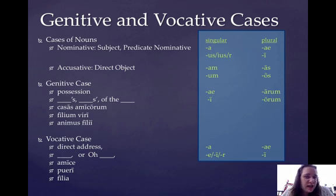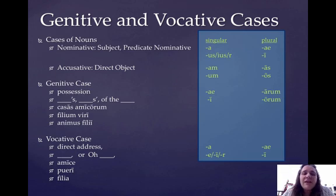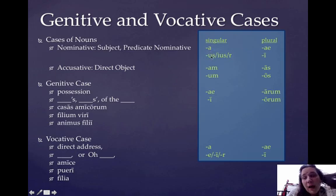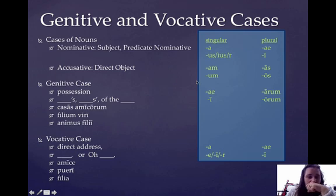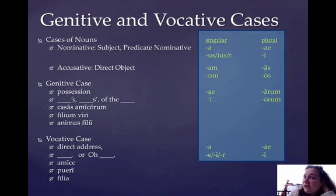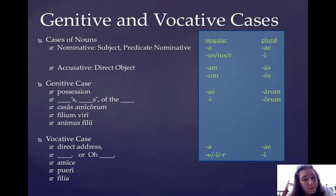The nominative is used to show the subject or the predicate nominative if you have the verb to be, and the accusative is used to show direct object. On this side of the slide, I have reminded you of the first declension and second declension singular and plural nominative endings and accusative endings. Now, the genitive case, like the nominative case, has more than one use. But today we're going to learn just the most basic and often most common use of the genitive, which is to show possession.